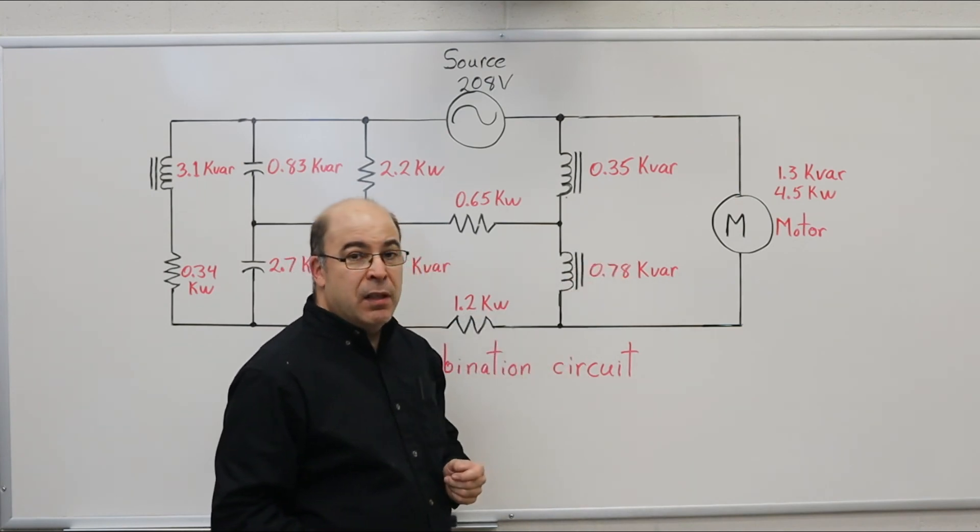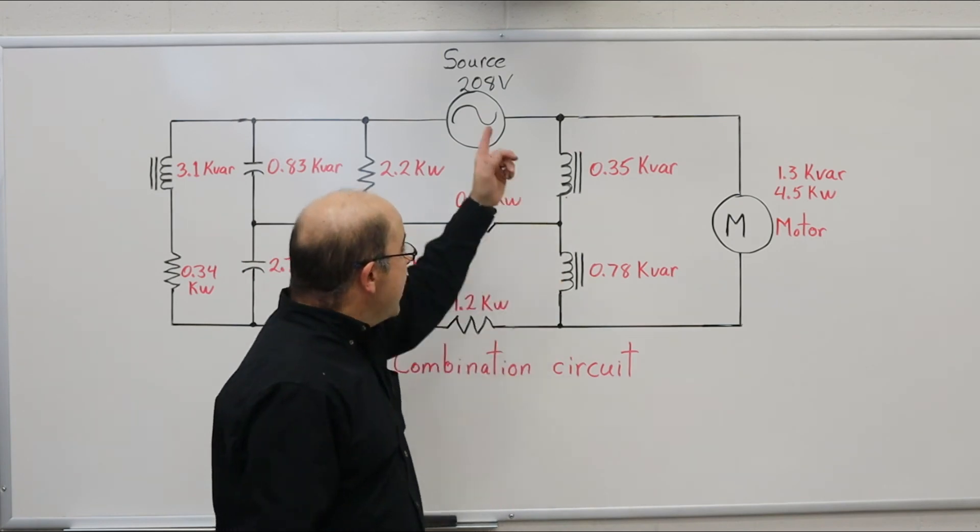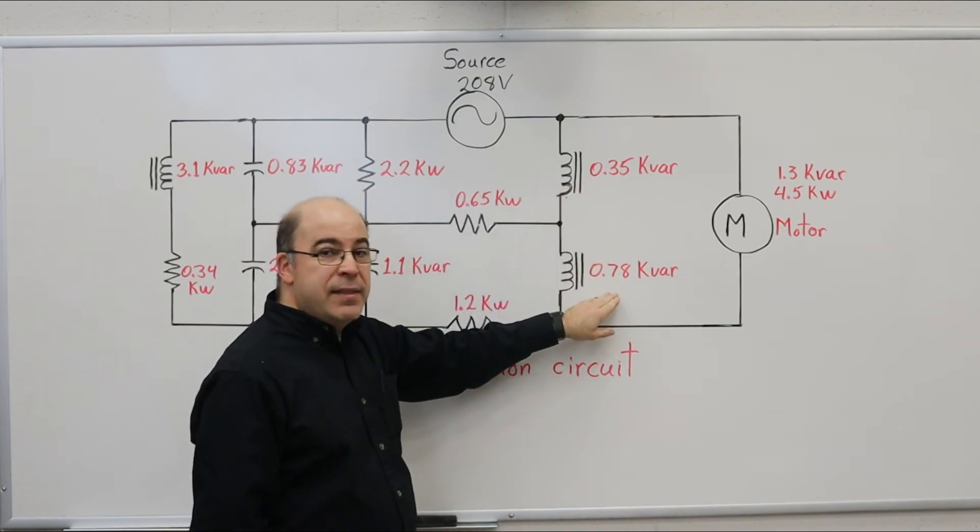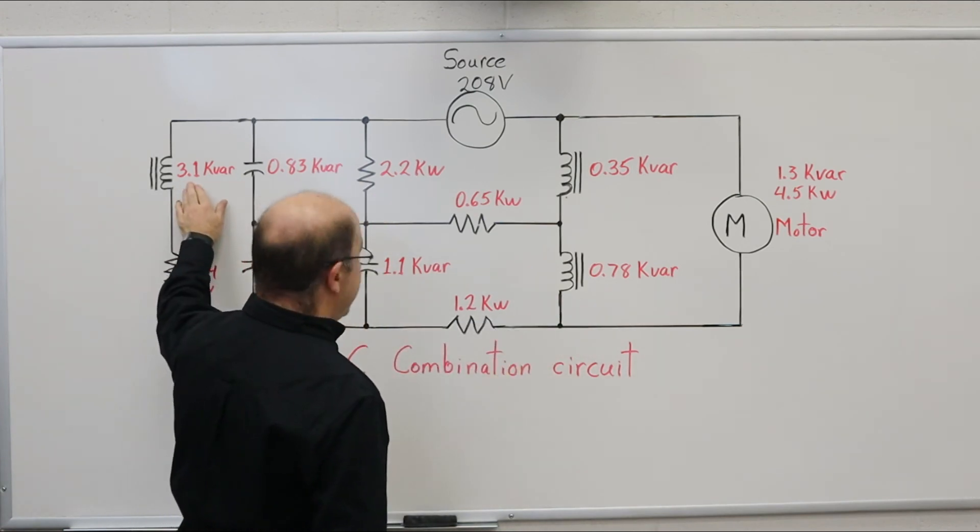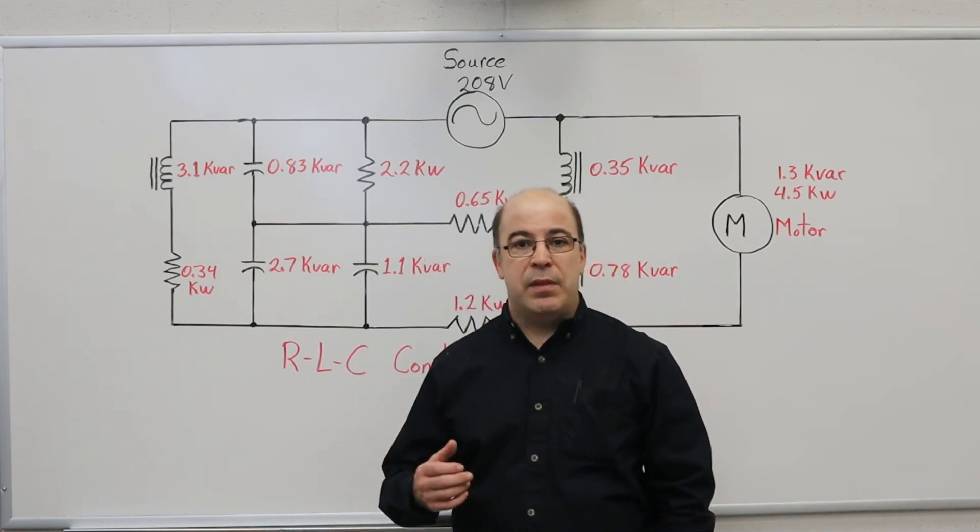the motor counts twice: once as a resistive load, the second time as an inductive load. So that 1.3 kVAR is going to be put into the inductive category, as well as these values: 0.35 kVAR, 0.78 kVAR, and 3.1 kVAR. We're going to add those together.